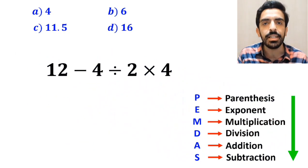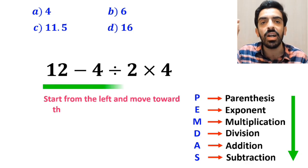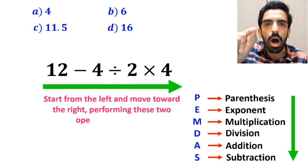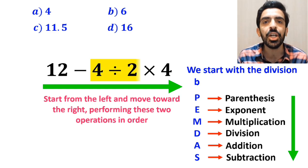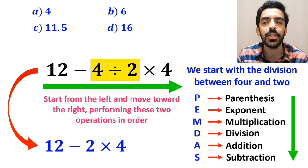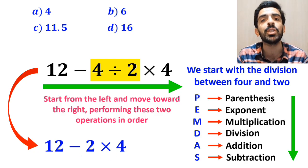In this situation, the best approach is to start from the left and move toward the right, performing these two operations in order. So first we start with the division between 4 and 2, which simplifies this expression to 12 minus 2 then times 4.